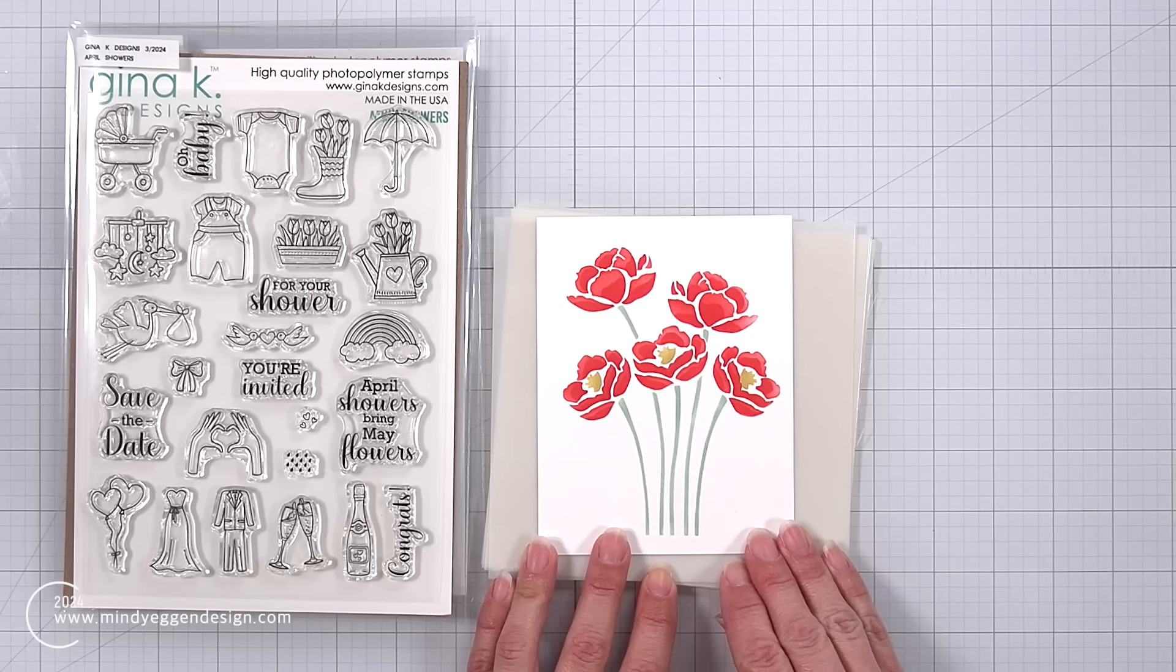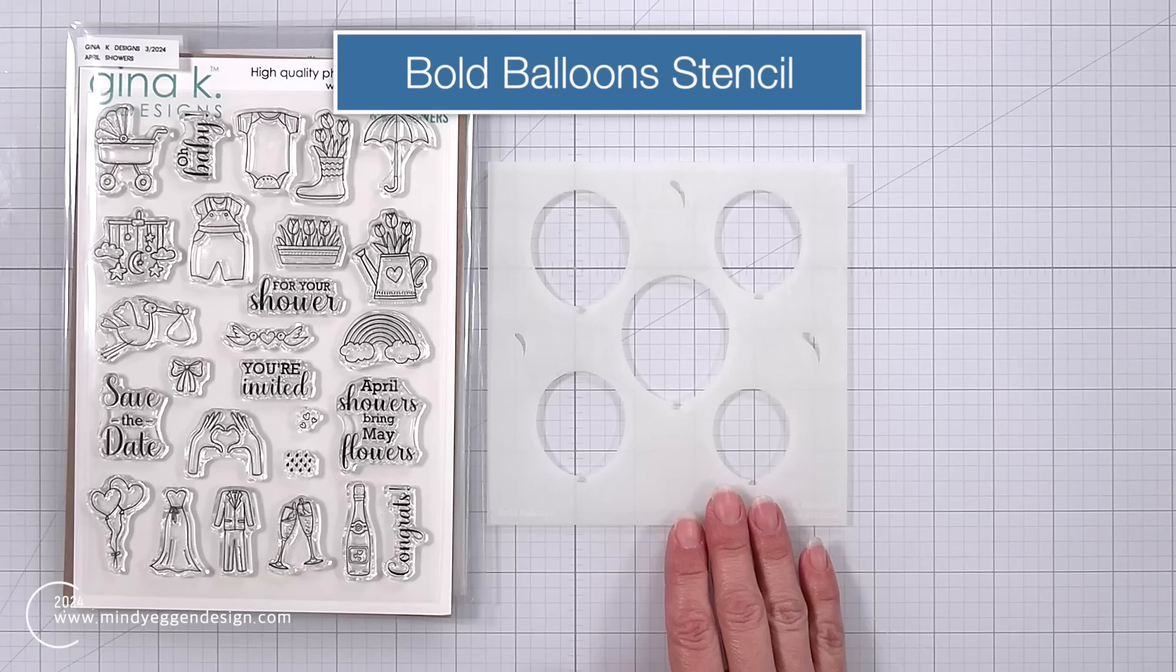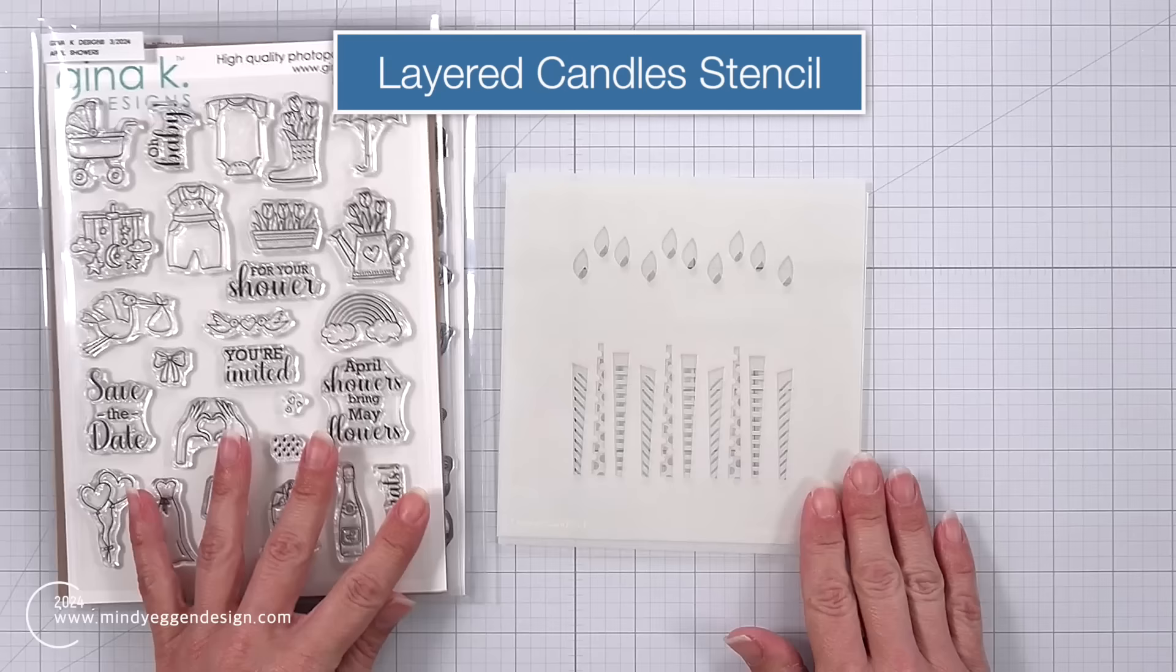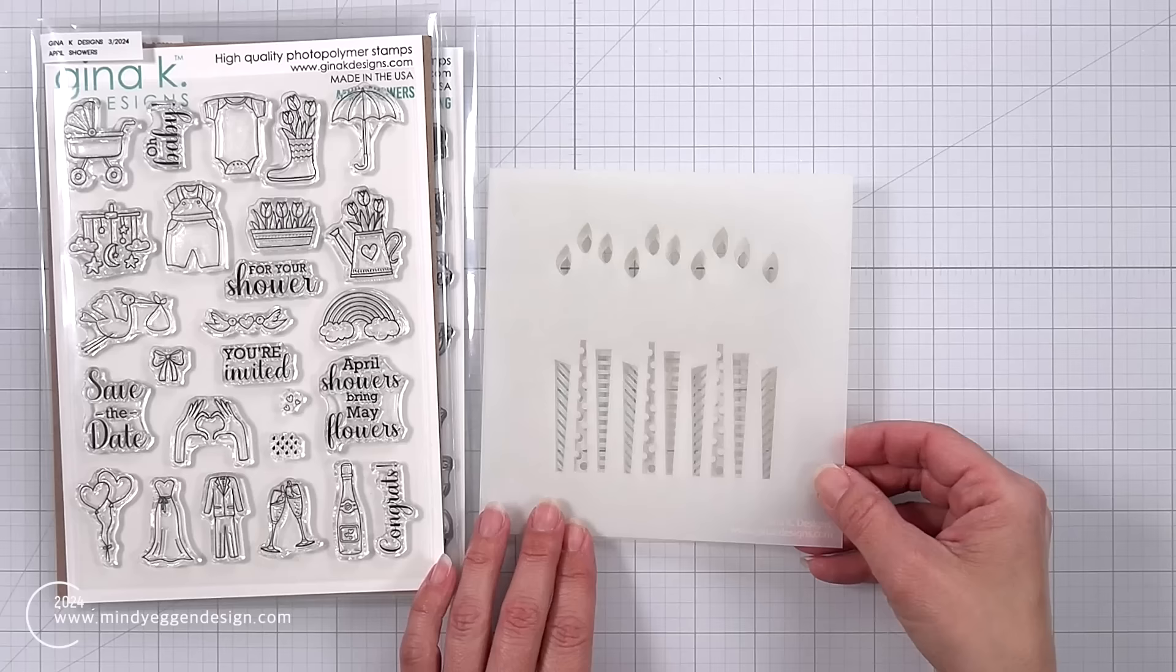The next stencil that is in the kit is the Bold Balloons stencil. Really great for creating birthday cards, anniversary cards, and then we have the Layered Candles stencil. So that is a two-piece layering stencil. This one I also did a quick mock-up of just to see how it layered together. This is going to be really fun for birthday cards.